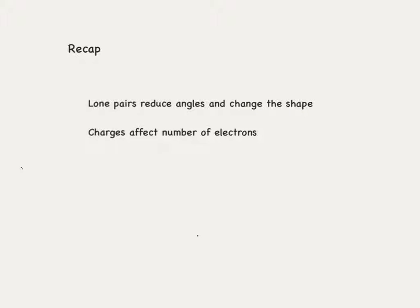To recap: lone pairs reduce bond angles by approximately 2.5 degrees per lone pair and change the overall shape of the molecule. Charges affect the number of electrons in the outer shell — a positive charge decreases the count by one, and a negative charge increases it by one. Thanks for watching; I'll see you next time.